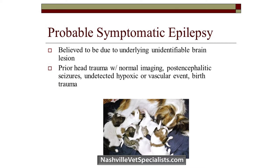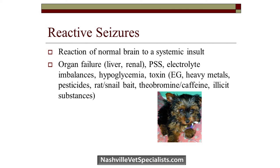Probable symptomatic epilepsy — preferably called seizures of unknown cause — describes patients who don't fit idiopathic epilepsy criteria. They may have some interictal deficits, but blood work, imaging, and CSF tap are all normal. These can include patients with a history of head trauma who later develop seizures. Reactive seizures occur in a patient with a presumably normal brain that is reacting to something systemic.